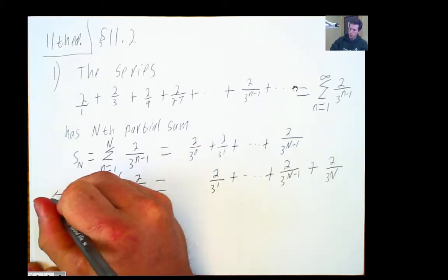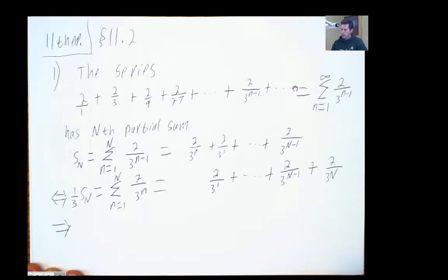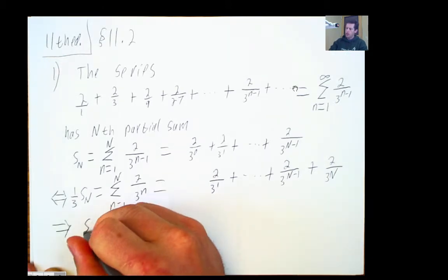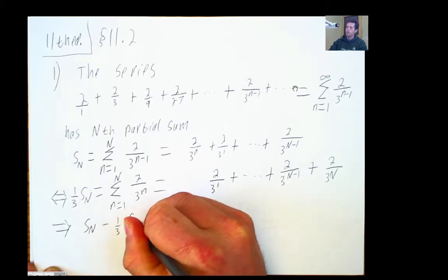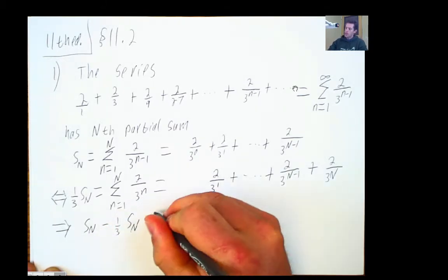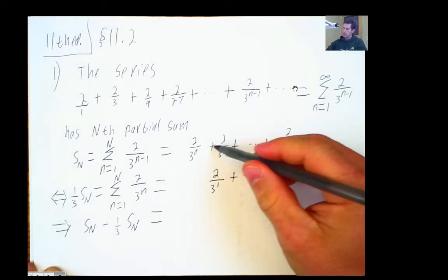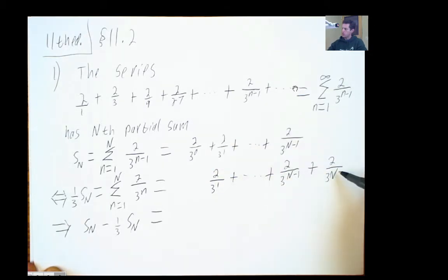And that means... By the way, this goes both ways. That means that if I take the difference of the nth partial sum and 1/3 of the nth partial sum, that I get... So every term here minus all the terms here,